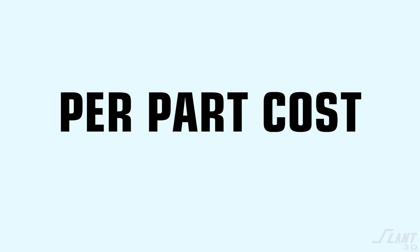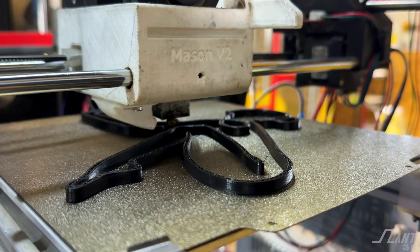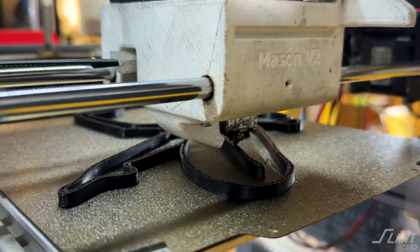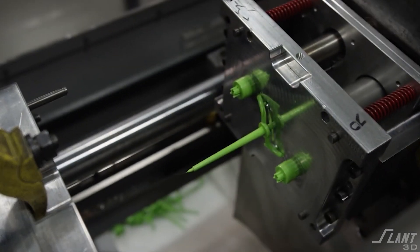There is a piece of math that is often done incorrectly whenever we're talking with organizations, and it is the per-part cost of a 3D printed part. In this video we want to talk about the very common misconception that comes up and how to explain it so that the engineer, the CFO, the VP, and everyone else understands what the actual cost of a 3D printed part is compared against the cost of a part from molding. Let's break down 3D printing versus injection molding.